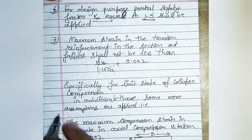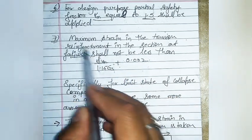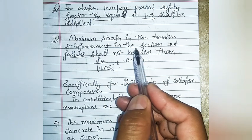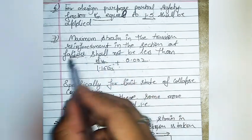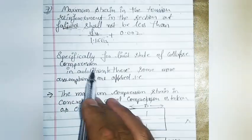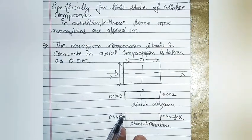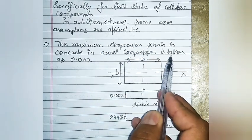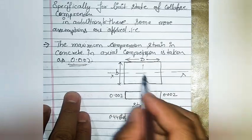This is the value of maximum strain in steel reinforcement at failure. When the strain in the tension reinforcement reaches this value, the section will fail. Specifically for the limit state of collapse in compression, an additional assumption is that the maximum compression strain in concrete under axial compression is taken as 0.002.